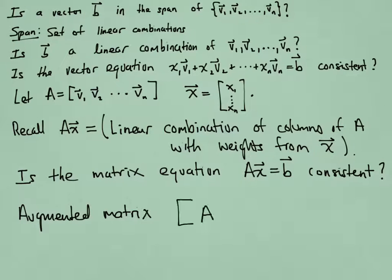To answer that question, we revert back to our basic techniques. We look at the augmented matrix A and put B on the right-hand side. And we do the row reduction and see if we can find solutions to this equation.